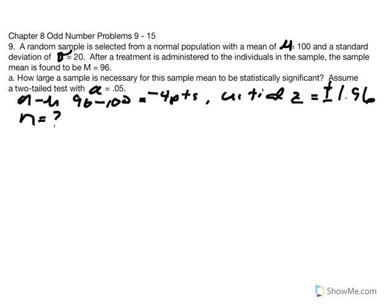We should recognize that since the mean difference or effect size is negative, the z value we're going to use is the negative version of that critical z: negative 1.96. The reason for that is simply because of this negative effect size — negative four points — the difference between the sample mean and the population mean.